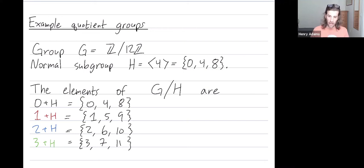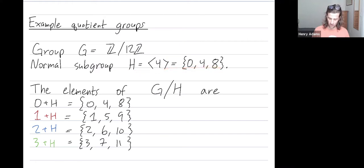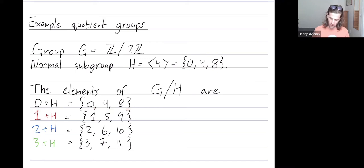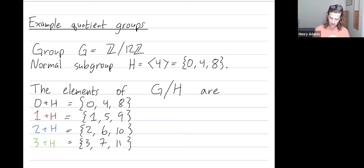The elements of G mod H are going to be the left cosets of this subgroup H. You always have H itself — the identity combined with H — whose elements are 0, 4, and 8. Then you have the coset 1+H, where you add 1 to each element to get 1, 5, and 9. You have the coset 2+H, you add 2 to each element.